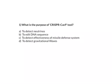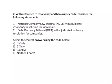Now, the questions from today's video. First: what is the purpose of CRISPR-Cas9 — (A) to detect neutrinos, (B) to edit the DNA sequence, (C) to detect effectiveness of missile defense systems, or (D) to detect gravitational waves? Second: with reference to the Insolvency and Bankruptcy Code, consider whether the National Company Law Tribunal adjudicates insolvency for individuals and the Debt Recovery Tribunal for companies. Post your answers in the comments, and we'll see detailed explanations in tomorrow's video. You can access notes for this video on our Law Excellence website.